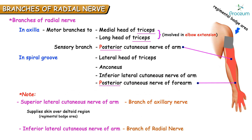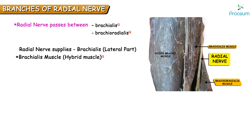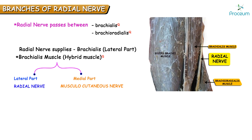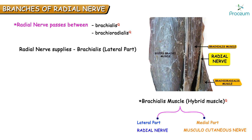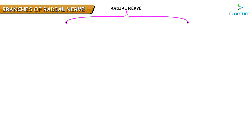After piercing the lateral intermuscular septum, the radial nerve passes between brachialis and brachioradialis. It supplies the lateral aspect of the brachialis muscle. Brachialis has dual nerve supply: the lateral part is supplied by the radial nerve and the medial part by the musculocutaneous nerve. The radial nerve also innervates brachioradialis and gives branches to extensor carpi radialis longus and extensor carpi radialis brevis, especially helping in wrist extension. While traveling anterior to the lateral epicondyle, the radial nerve divides into its terminal branches.